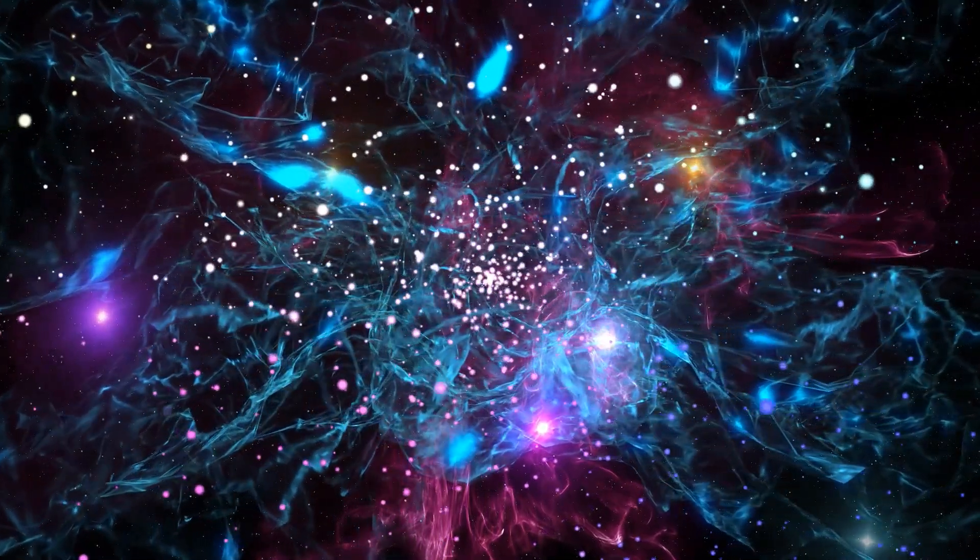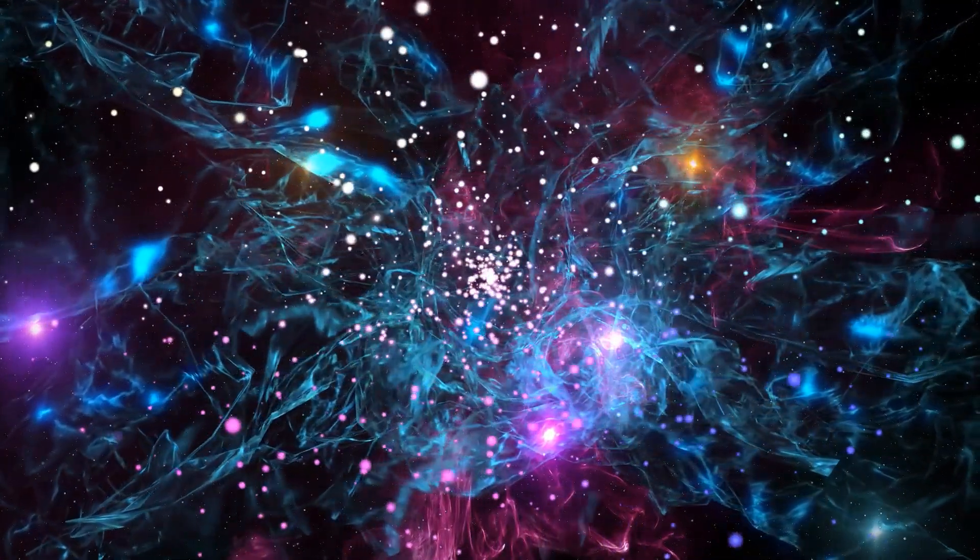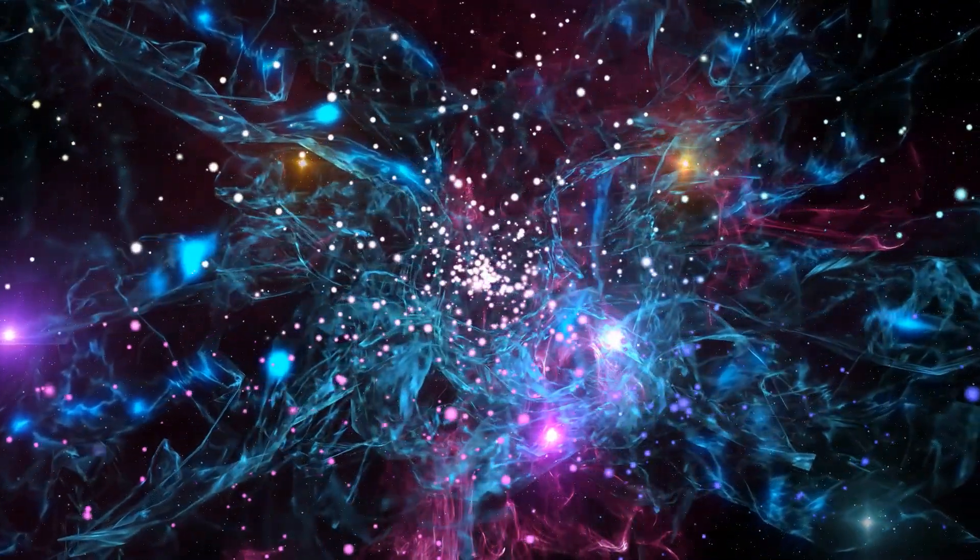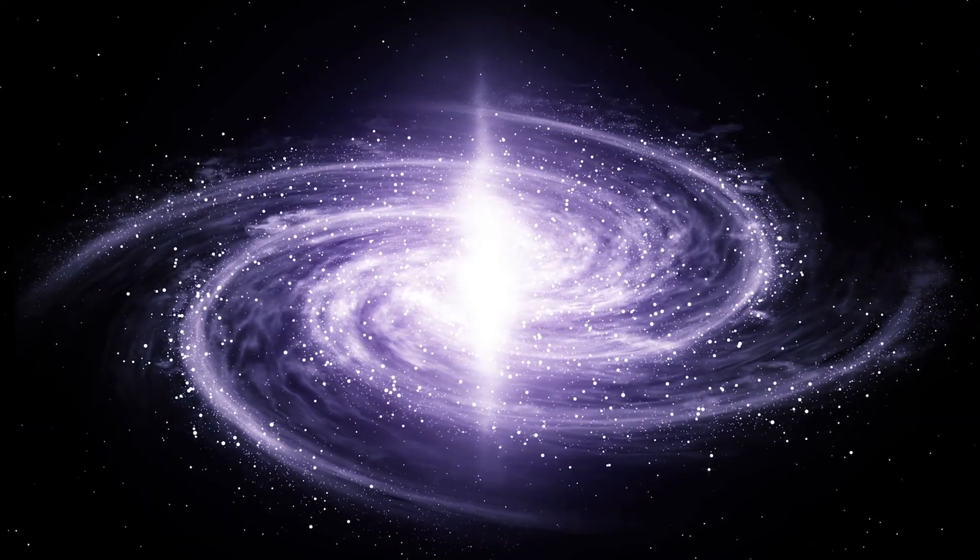This odd system is known as 47 Tucani X9. It's in a globular star cluster in the southern constellation Tucana the Toucan. The cluster is about 15,000 light years from Earth.